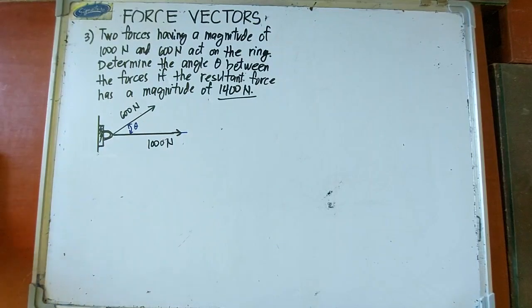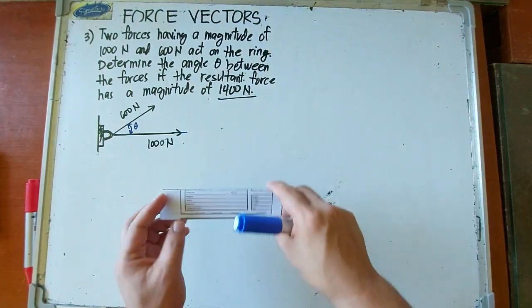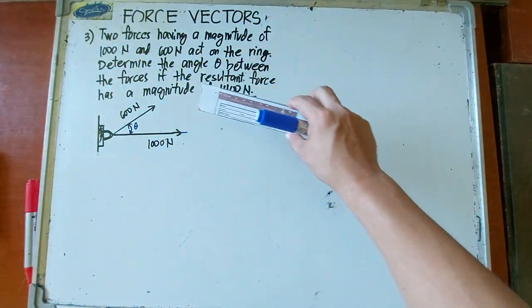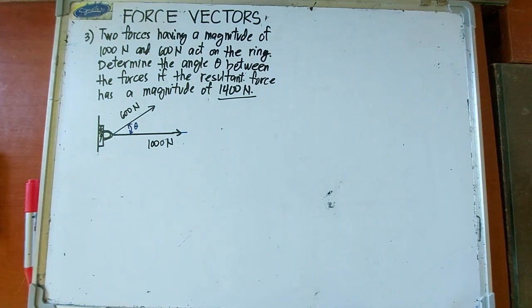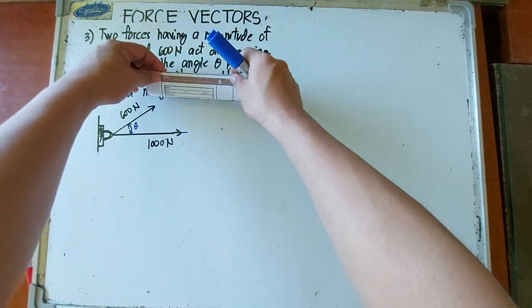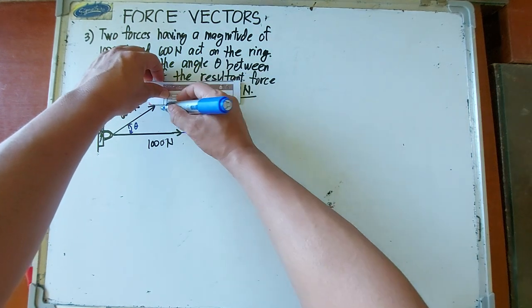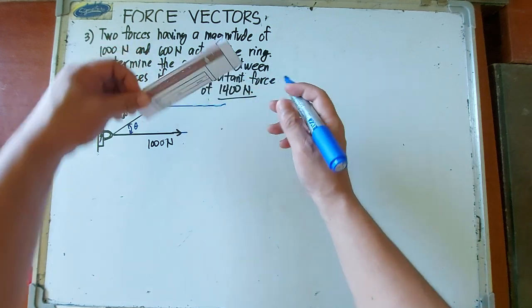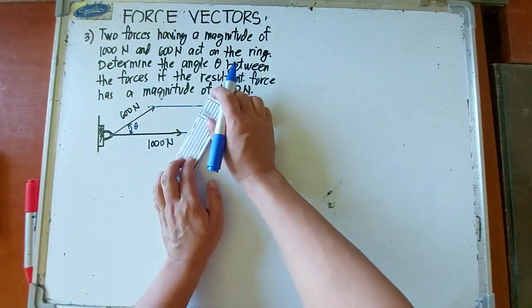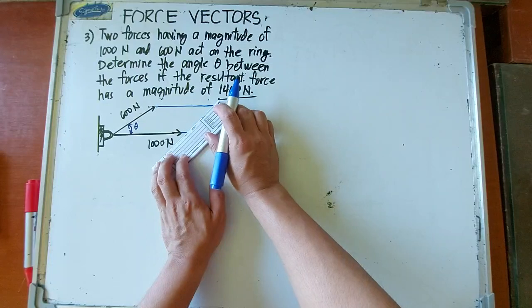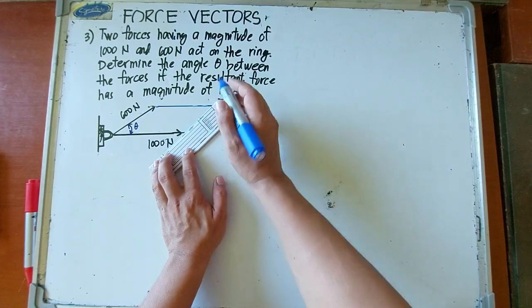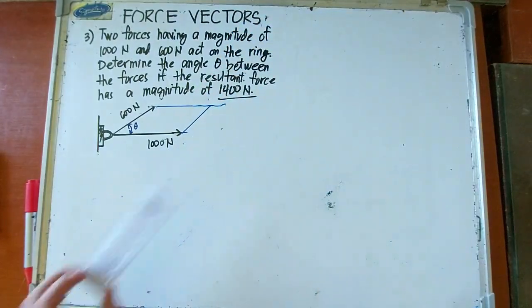We apply the parallelogram law or method to solve for the angle. So this time, the unknown is the angle. We need to form a parallelogram by drawing parallel lines relative to each force. So parallel to the 1,000 newton force and we have a parallel line relative to the 600 newton force.